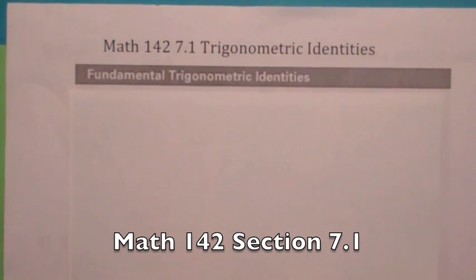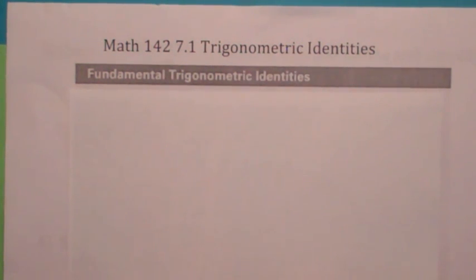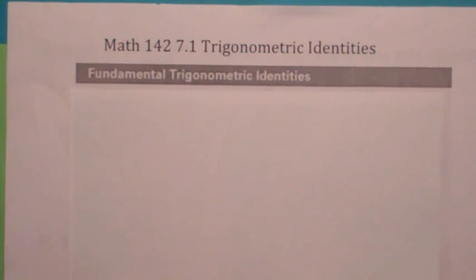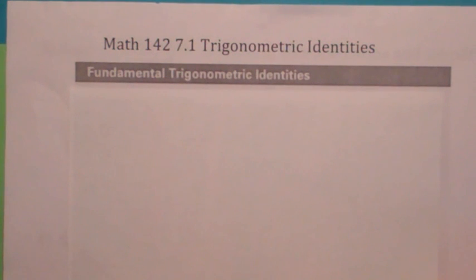You've already looked at trigonometry from a graphical point of view in Chapter 5 — the graphs of sine, cosine, tangent, and all the others. In Chapter 6, you looked at the geometric aspects of trig: right triangle trig and how to compute trig values of any angle. In this chapter, we're going to look at the analytical or algebraic aspects of trig.